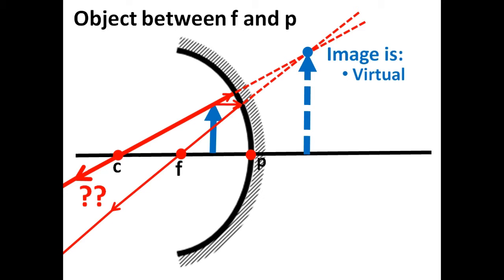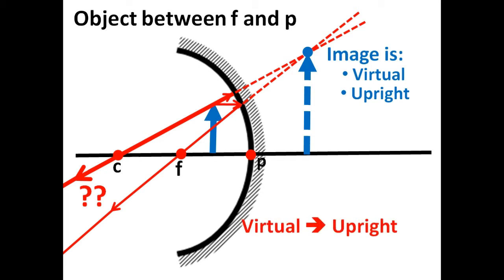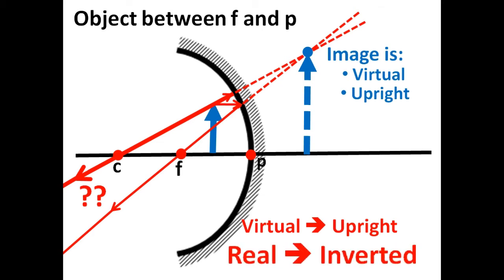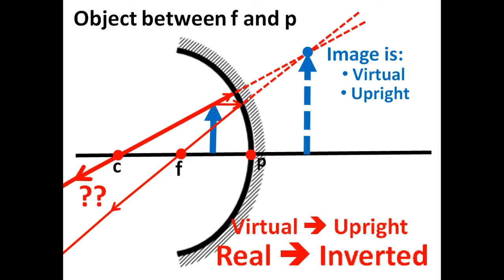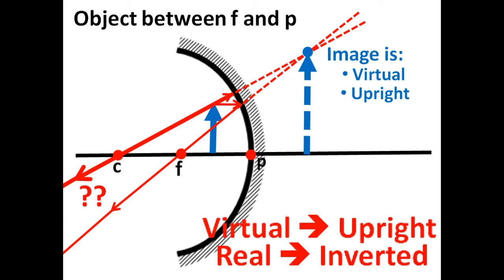The image is also upright, and this is the only case in which we have seen the image of a concave mirror be upright. Here is a helpful hint: virtual images formed by mirrors are always upright, while real images are always inverted. All the previous images we studied were always real and inverted — real images formed by mirrors are always inverted, while virtual images are always upright.